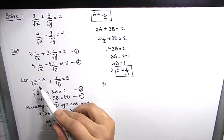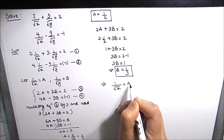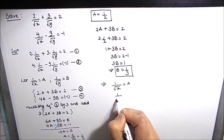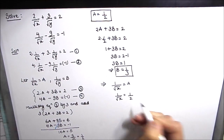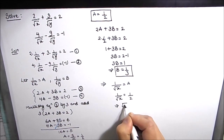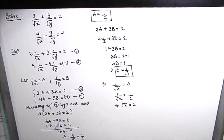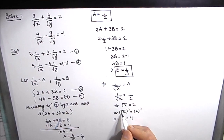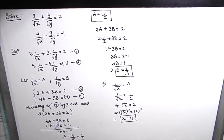Now we come back to the substitution: 1 over root x equals A, so 1 over root x equals 1/2. This gives us root x equals 2. To find x, we square both sides: the square of root x is x, and the square of 2 is 4. So x equals 4.